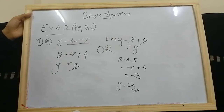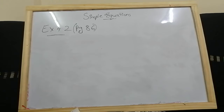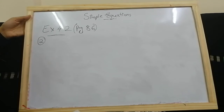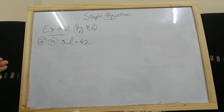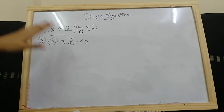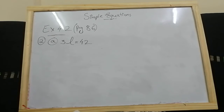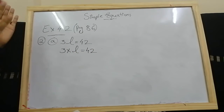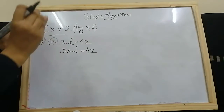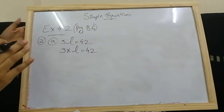Now let's move to Question 2, which also says: give first the step to separate the variable, then solve. The difference from Question 1 is that here it involves multiplication and division, not addition and subtraction. The first sub-question is 3l equals 42. In addition and subtraction, plus becomes minus when moved after equals. Similarly, multiplication becomes division, and division becomes multiplication when moved after equals.